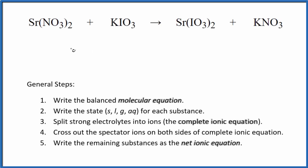Let's write the balanced net ionic equation for Sr(NO₃)₂ plus KIO₃. We have strontium nitrate here. This is potassium iodate. So the first thing we do with net ionic equations, we balance the molecular equation. This is the molecular equation here.